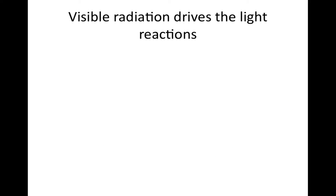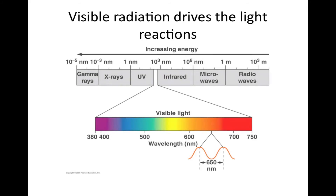Visible radiation drives the light reactions. Sunlight is a type of energy called electromagnetic energy or radiation. An electromagnetic spectrum is the full range of electromagnetic wavelengths, from the very short gamma rays to the very long wavelength radio waves. Visible light — the radiation your eyes see as different colors — is only a small fraction of the spectrum, consisting of wavelengths from about 380 nm to about 750 nm. The distance between the crests of two adjacent waves is called a wavelength. Shorter wavelengths have more energy than longer wavelengths. Light also behaves as discrete packets of energy called photons — a fixed quantity of light energy — and the shorter the wavelength, the greater the energy.